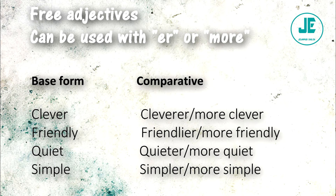I also have what I call flexible adjectives — adjectives where the comparative form can be made by adding '-er' or by using 'more.' For example: 'clever' can be 'cleverer' or 'more clever,' 'friendly' can be 'friendlier' or 'more friendly,' 'quiet' can be 'quieter' or 'more quiet,' and 'simple' can be 'simpler' or 'more simple.'